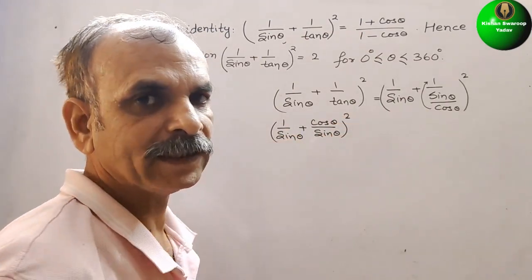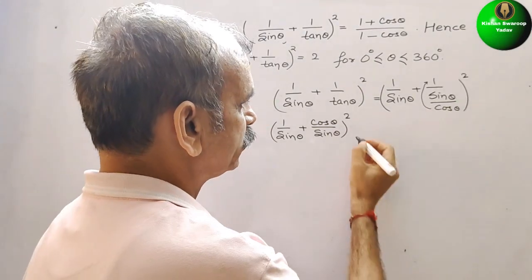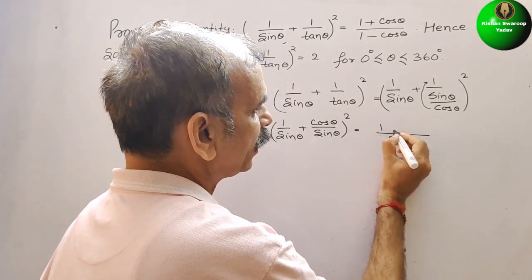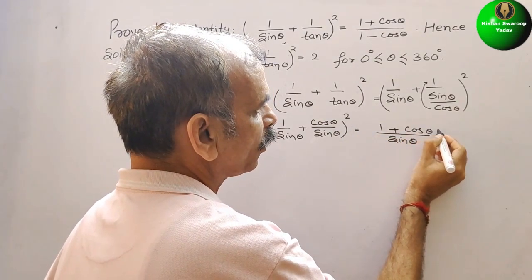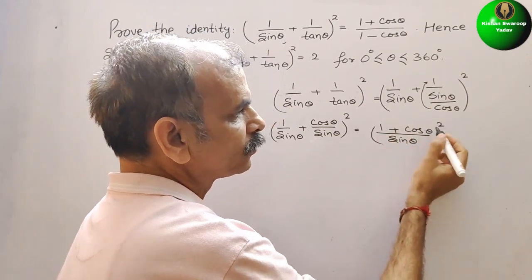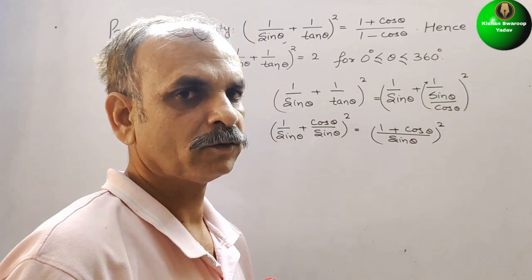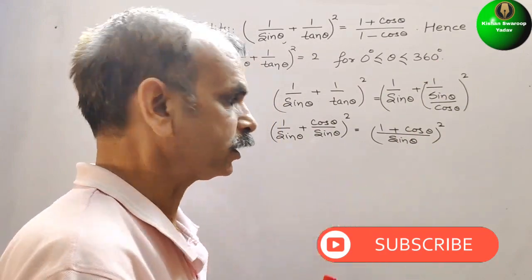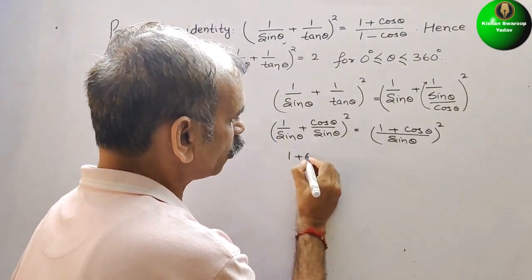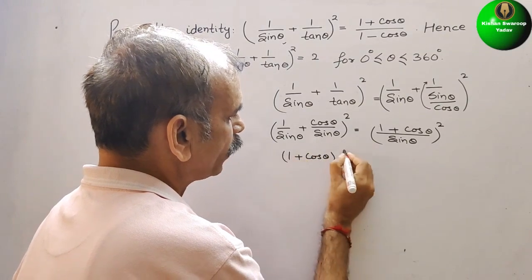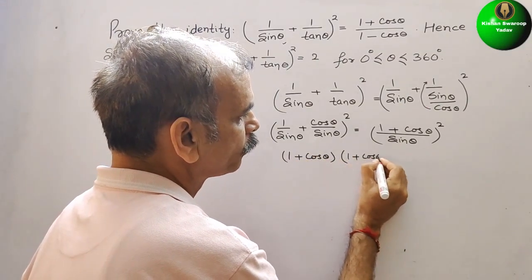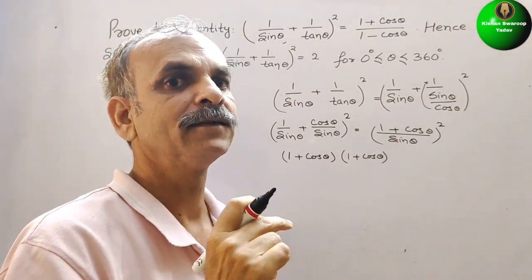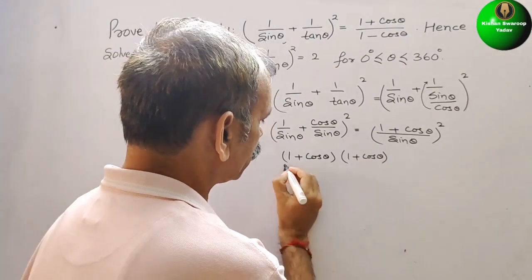We take the LCM which is sin θ, so we get ((1 + cos θ)/sin θ)². Now we expand the square: (1 + cos θ)(1 + cos θ) divided by sin²θ.